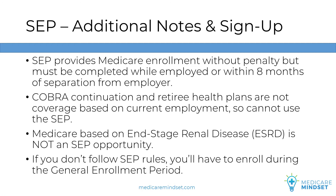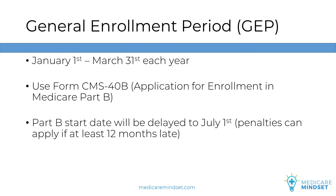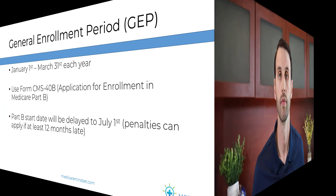If you don't follow the rules mentioned above, you're stuck enrolling in Medicare during the General Enrollment Period. If you miss both your IEP and SEP, you must enroll during the GEP, which spans January 1 through March 31 each year. The application needs to be completed through a local Social Security office or by phone. You'll need the Application for Enrollment in Medicare Part B form, which can be located by typing CMS40B in the search bar at ssa.gov. When you enroll during the GEP, your Part B start date will be delayed to July 1 of that year. If this creates at least a 12-month period in which you should have had Part B, you'll be assessed a 10% lifetime premium penalty, and the penalty will be larger the longer you went without Part B.